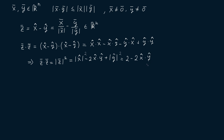And now, since this equals the magnitude of z squared, it has to be non-negative, so greater than or equal to 0. Dividing by 2 and taking x-hat dot y-hat to the right-hand side, we are left with 1 is greater than or equal to x-hat dot y-hat.